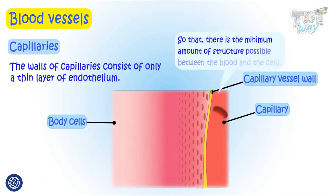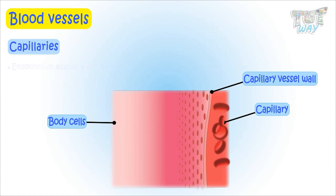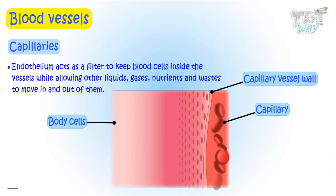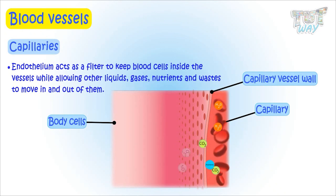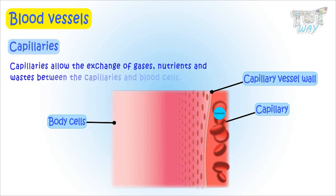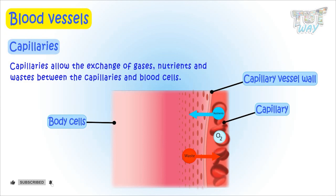The walls of the capillaries consist of only a thin layer of endothelium, so that there is a minimum amount of structure possible between the blood and the cells. This endothelium acts as a filter to keep the blood cells inside the vessels while allowing other things like nutrients, gases, and waste to move in and out. Nutrients from the blood can move to the cells, and waste from the cells can move to the capillaries. Oxygen from the blood can move to the cells, and carbon dioxide from the cells can move back to the capillaries.